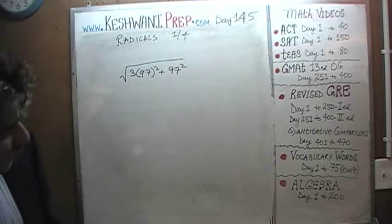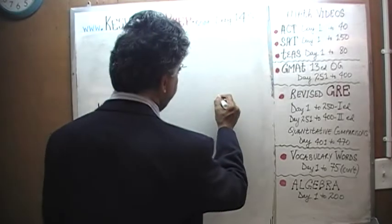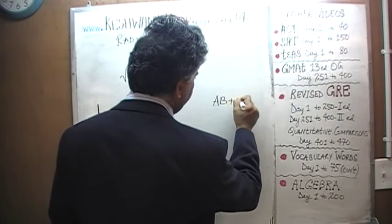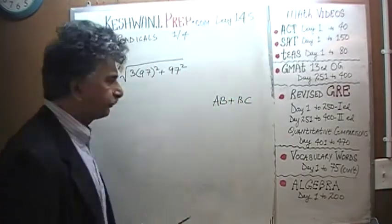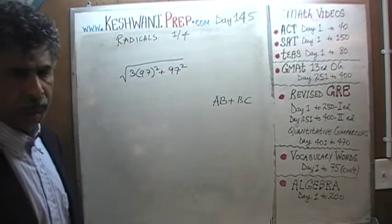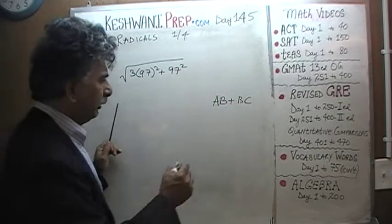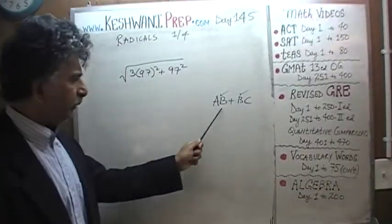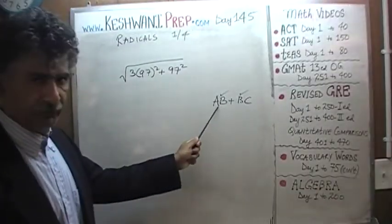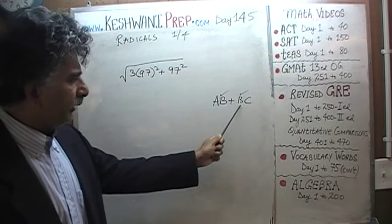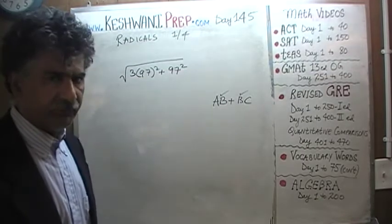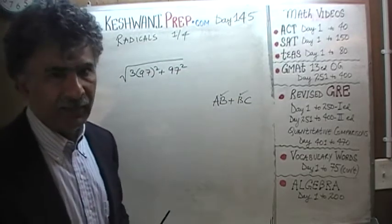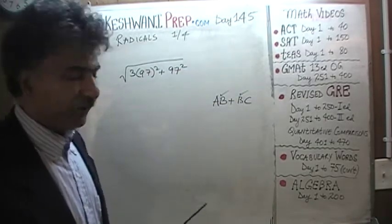What we need to understand is: if we have something like a times b plus b times c, what can we do? We have to realize that b appears in both terms — in the first term as a times b, and in the second term as b times c. B is what is known as the common factor.